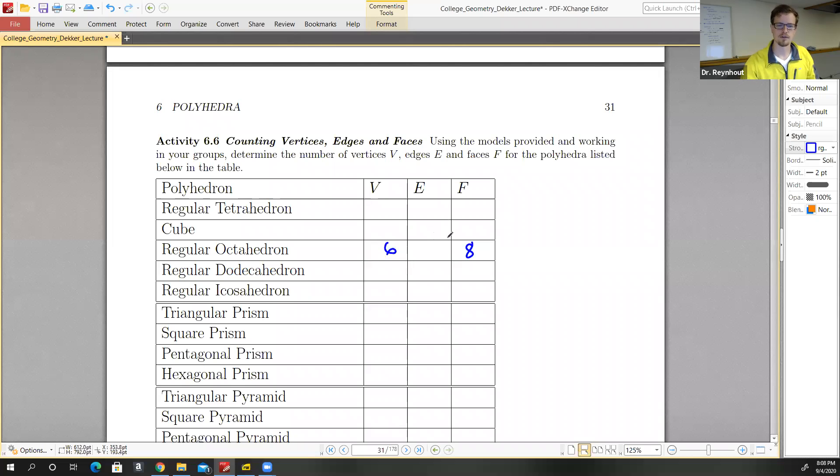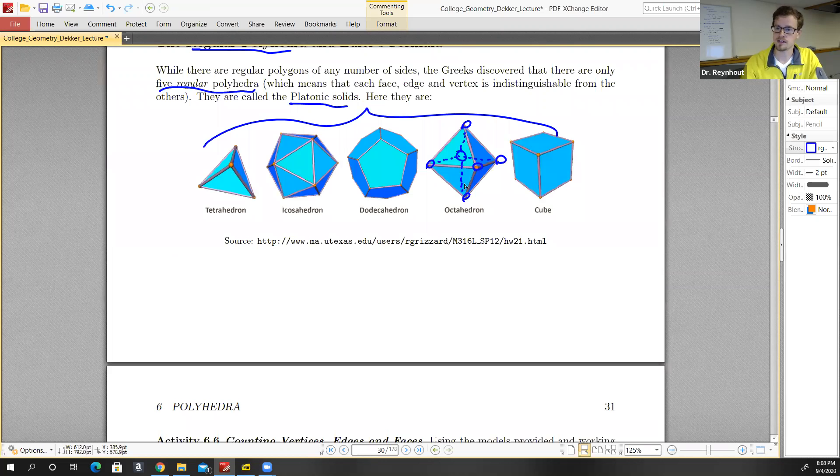And then for the number of edges, we've conveniently filled this in as well. We're going to actually have some dice in class that we'll be able to hold, manipulate, and try to count these things. So we've got one, two, three, four that all go up to this vertex.